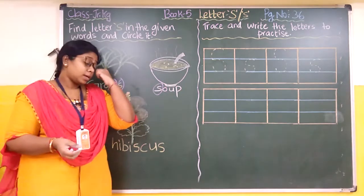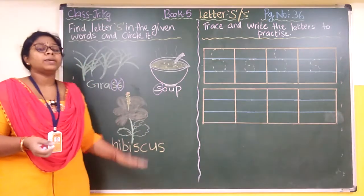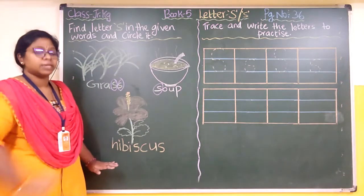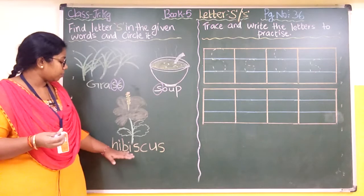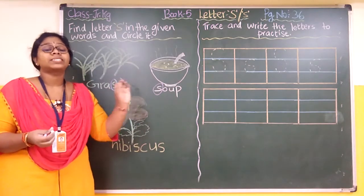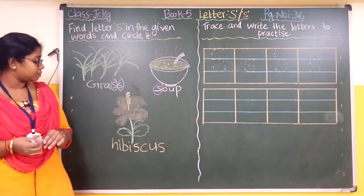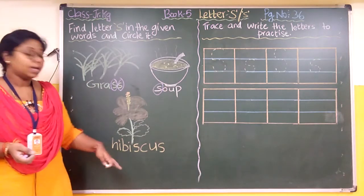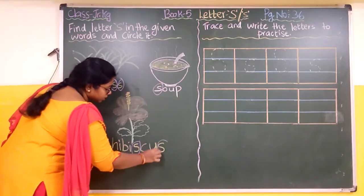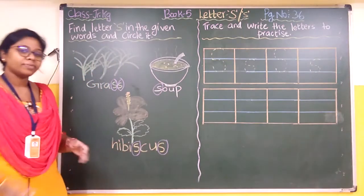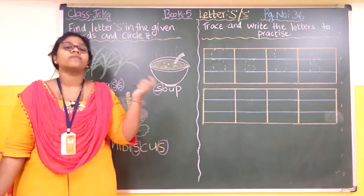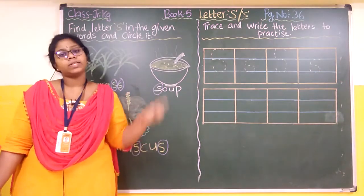Now the next one is hibiscus — it's a flower, also called shoe flower. H-I-B-I-S-C-U-S, hibiscus. So how many times is S repeating? 2 times — one in the middle and one at the end. So two more words will be there in your book. You will find out the letter S and circle it.